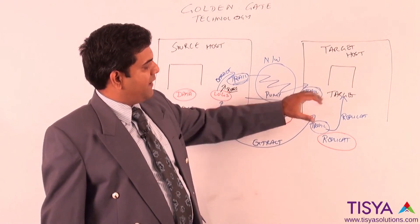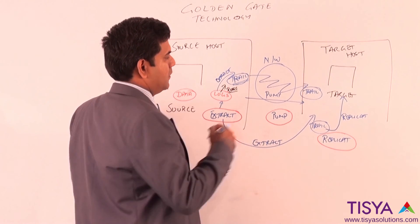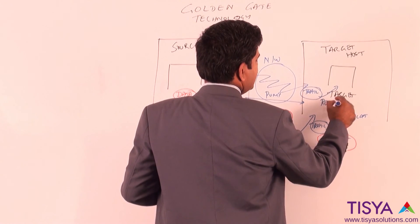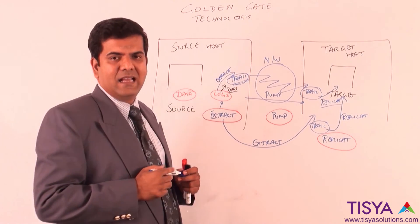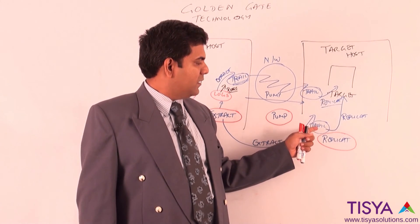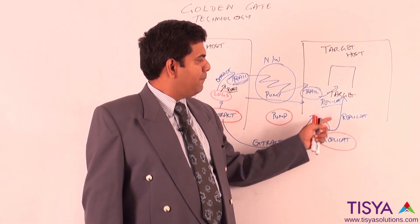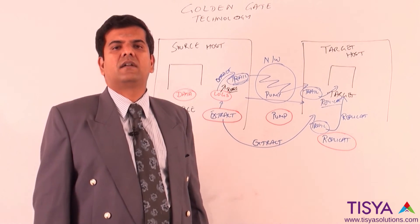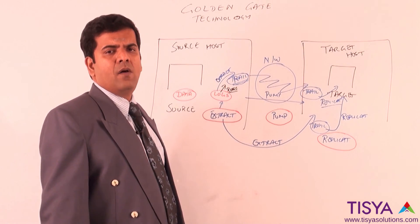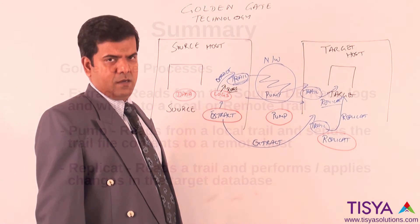Once the trail files have been created, then replicate is a process that is created in the target host which is going to read from the trail files and populate the transactions into the target host. This is a high level architecture about how Golden Gate works.